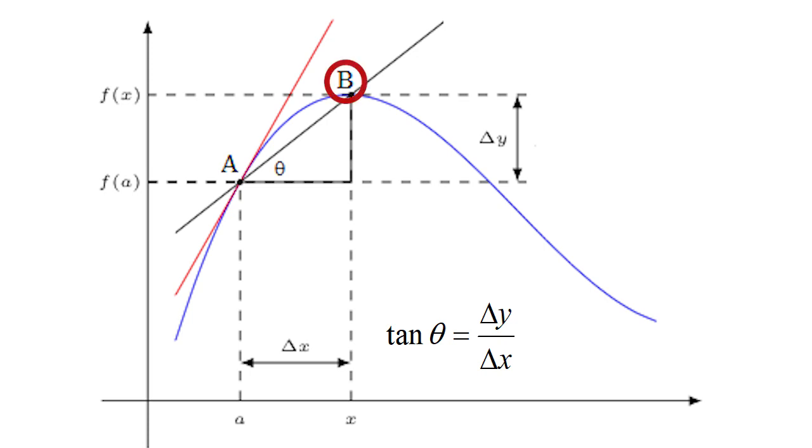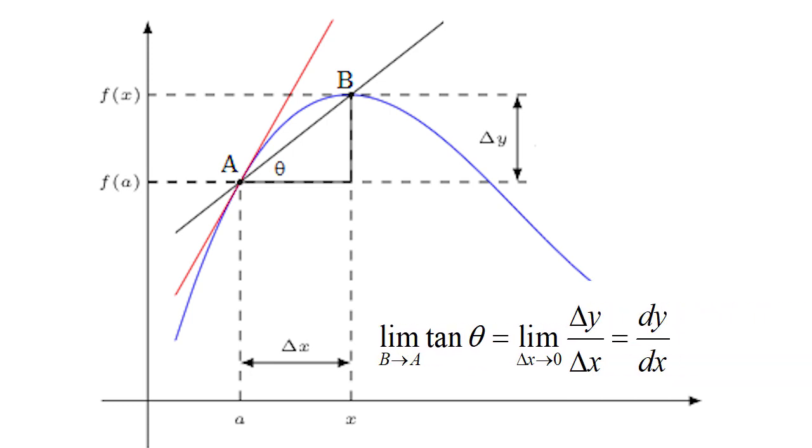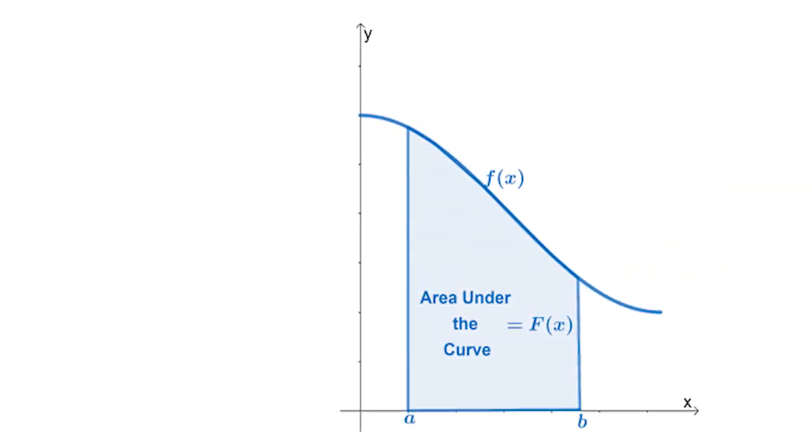we want this B to be as close as possible to A so that the chord becomes a tangent at A. For this to happen, B should be nearly A but not A. In this case, we can take a limit of B approaching A and we get derivatives and differentiation. Another fundamental problem in calculus